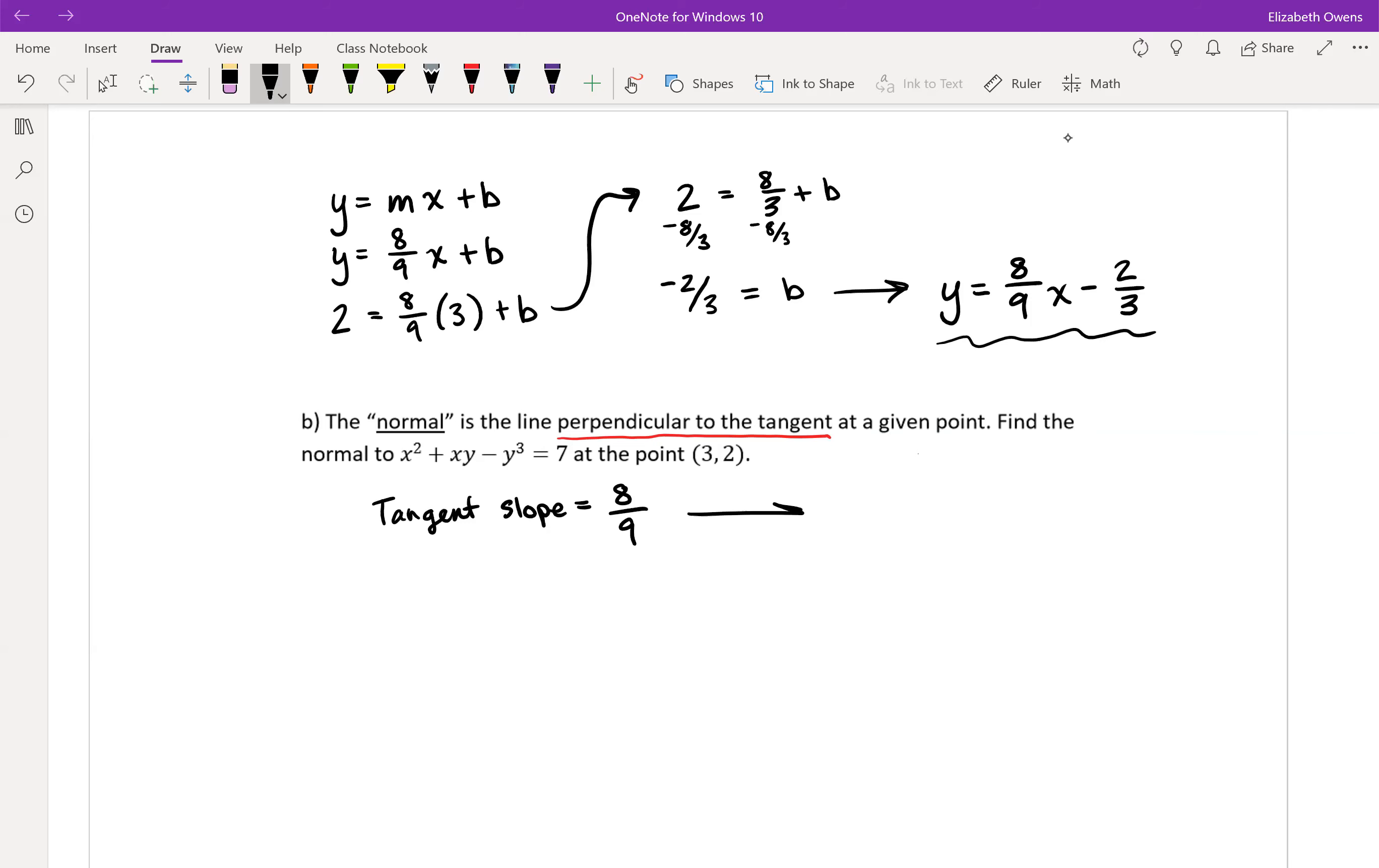And so that means our normal slope is perpendicular to that. If you'll recall from back in the day, perpendicular lines have slopes that are negative reciprocals. So we flip this over and stick a negative on it: -9/8. And there's our normal slope.